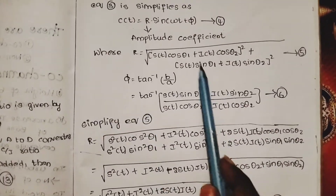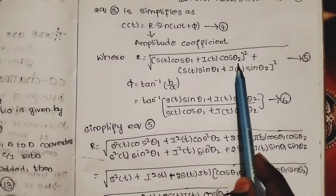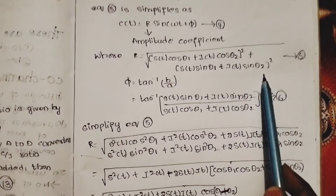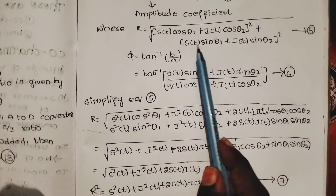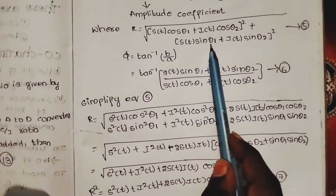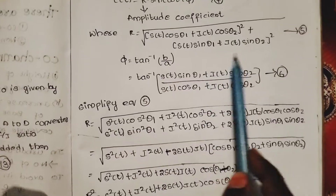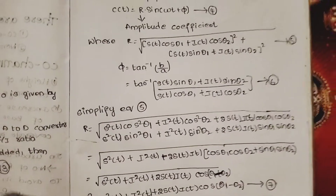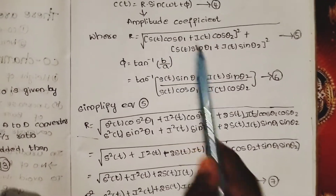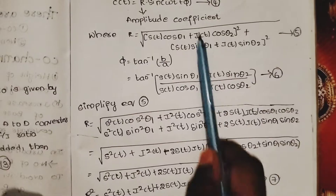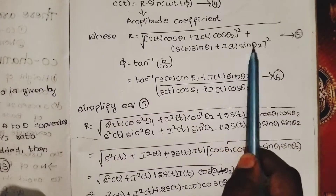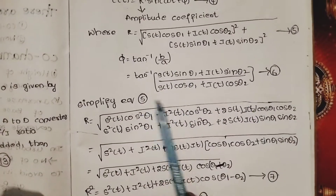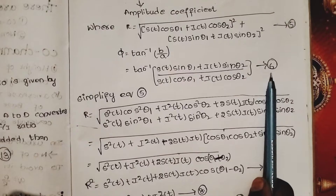R is given by the square root of: [s(t)·cos θ1 + i(t)·cos θ2]² + [s(t)·sin θ1 + i(t)·sin θ2]². This is the fifth equation. And φ is the sixth equation: φ = tan⁻¹ of [s(t)·sin θ1 + i(t)·sin θ2] divided by [s(t)·cos θ1 + i(t)·cos θ2].